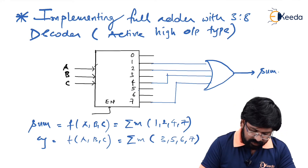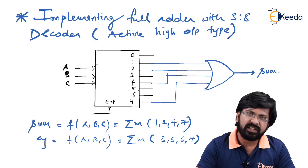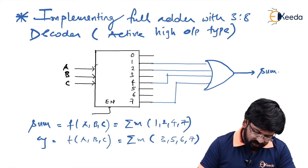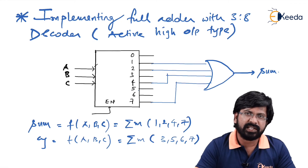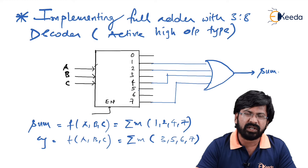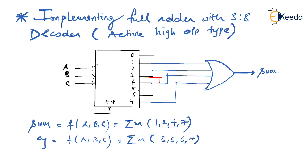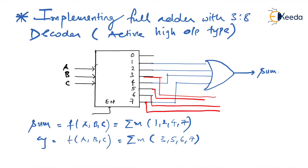Next, you have to implement the similar function for carry. It does not mean you need a separate decoder — within the same decoder only, you can implement carry also. Carry is a function of A, B, C where min terms are 3, 5, 6, 7. So output numbers 3, 5, 6, and 7 are taken together and again connected as inputs of an OR gate, and the output of the OR gate is considered as carry. It is that simple to implement a full adder with the help of a decoder, if the function in terms of min terms is known.